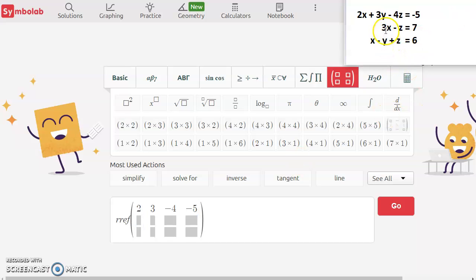In our second row here, we've got 3x minus z. Notice there's no y here, so we have 0 y's. We're going to want to make sure to put a 0 in the y spot. So we've got 3, 0, negative 1, 7.